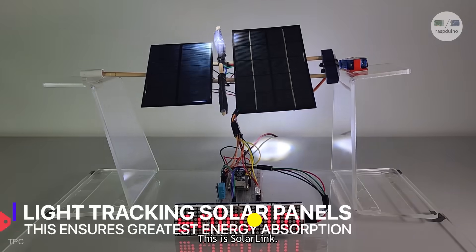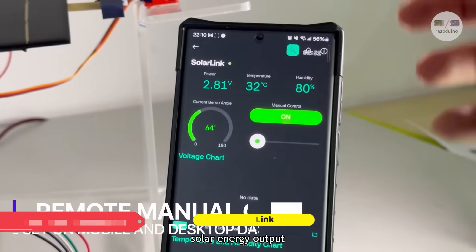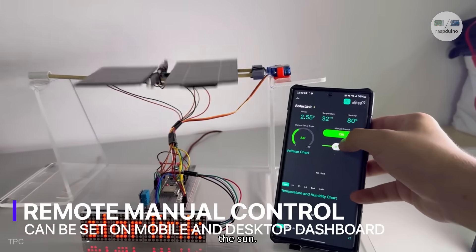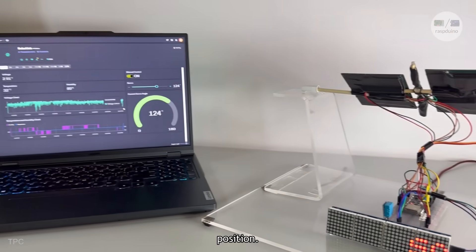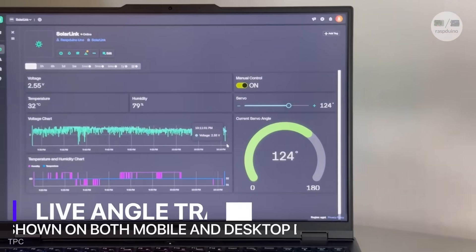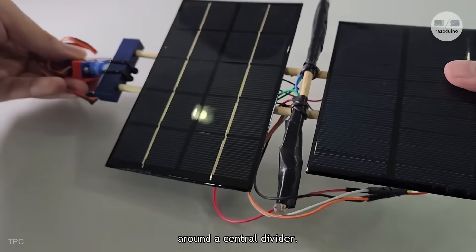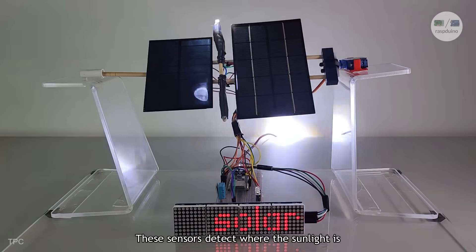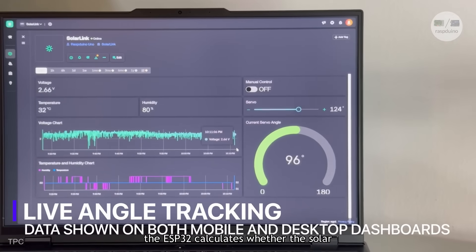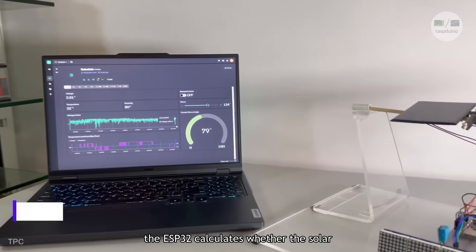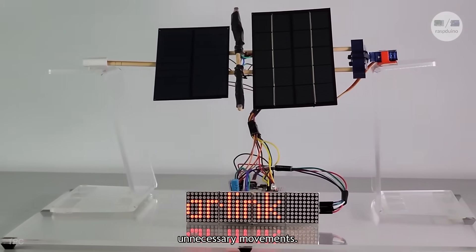Number 7. This is SolarLink. The goal of this project is to increase solar energy output by keeping the panel pointed directly at the sun. Unlike fixed panels, this setup constantly adapts to the sun's position. The system uses two LDRs placed at different angles around a central divider. These sensors detect where the sunlight is strongest. Based on their readings, the ESP32 calculates whether the solar panel needs to tilt or rotate. The project is efficient and avoids unnecessary movements.